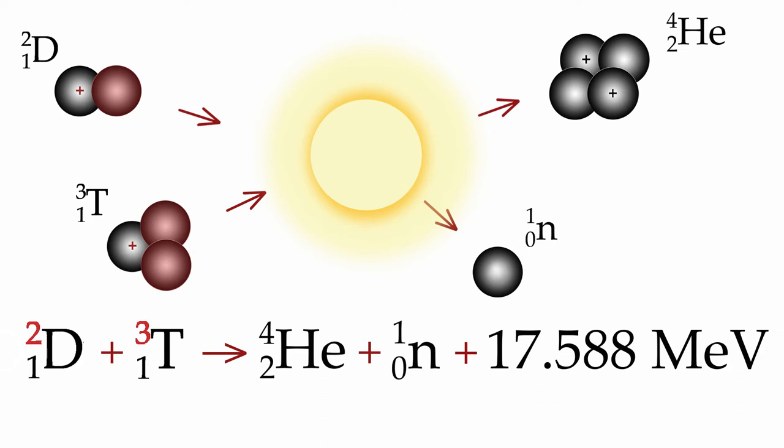which is equal on the right-hand side to 4, two protons plus two neutrons, plus 1, namely the neutron, which has a weight of 1. So you have 5 on both sides.